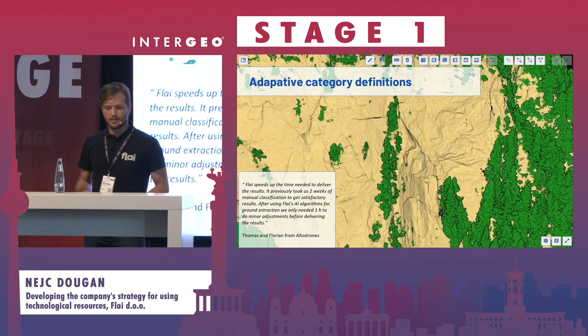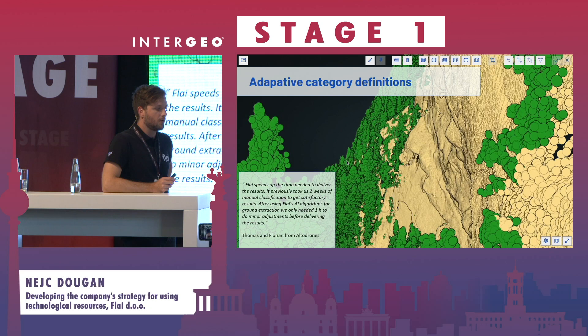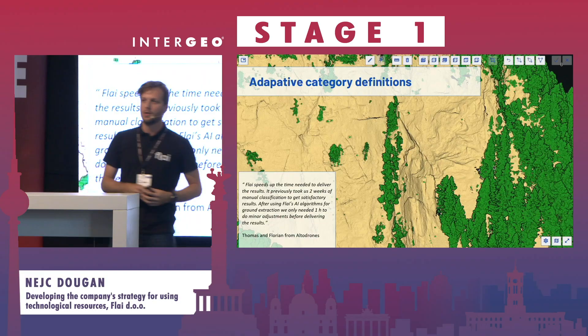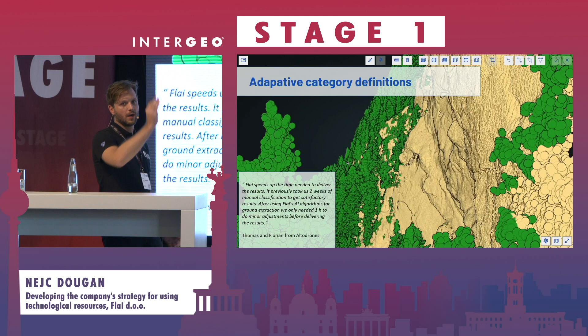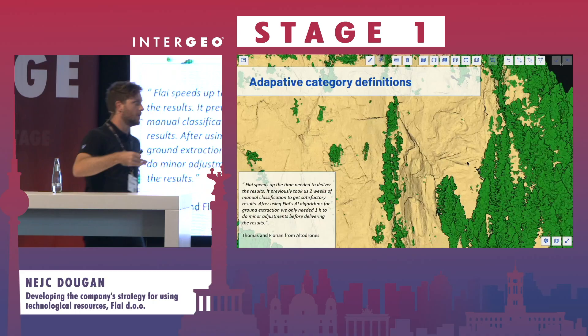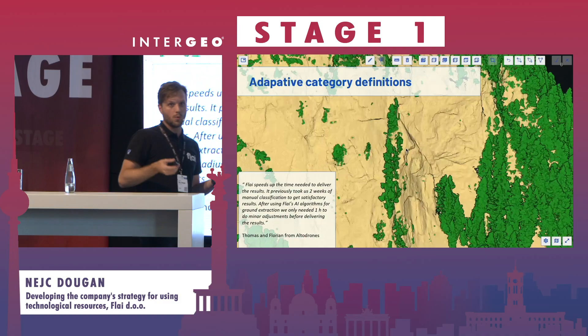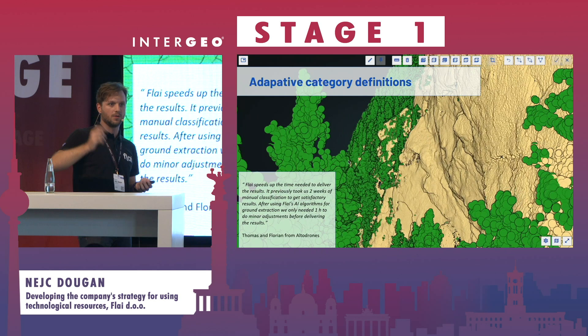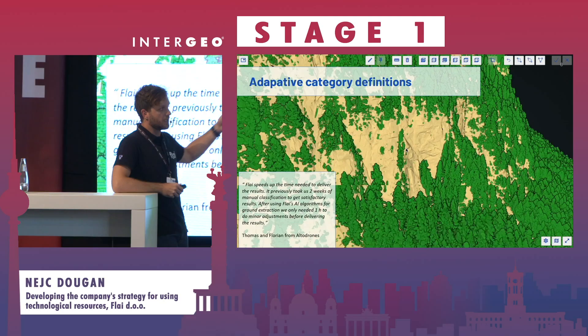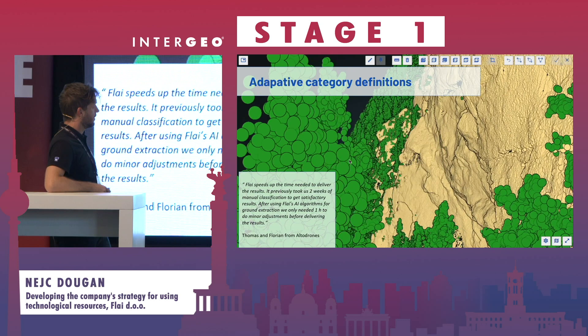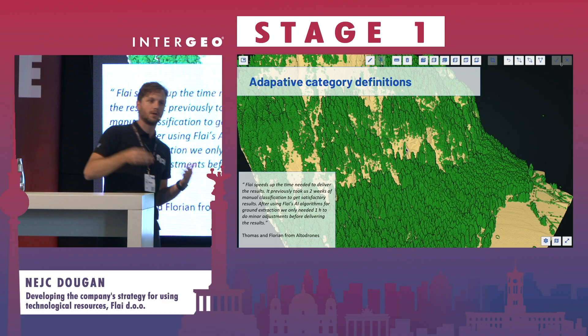The second use case where adaptability of category definitions comes into play is rock face mapping. Standard ground classifiers do not classify overhangs as ground, since that would generate artifacts in elevation models. But for one particular client, the request was that overhangs also be classified as ground points. We picked a few small tiles, annotated them manually to match the new definition, did some retraining of our pre-trained model, and generated a classifier tailored to that client's specific ground definition.